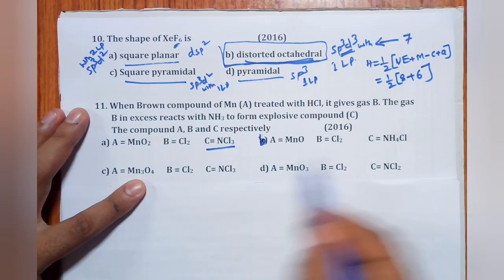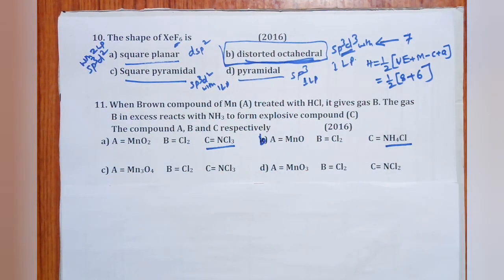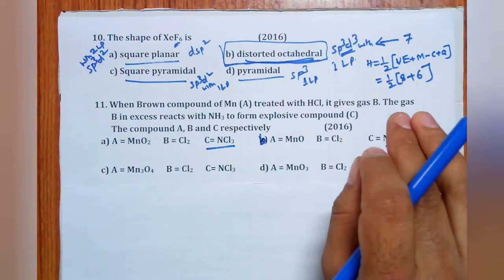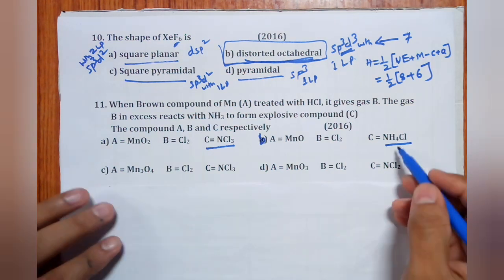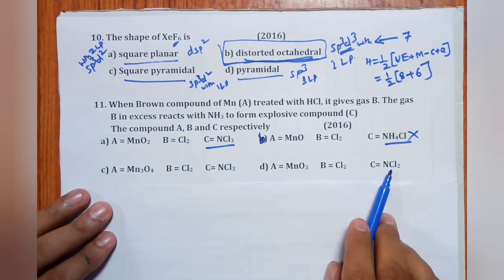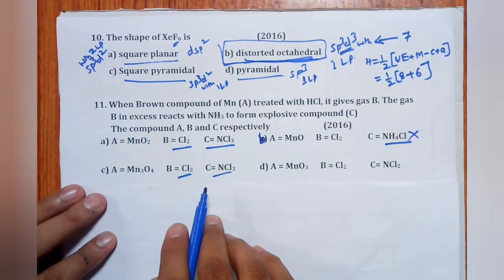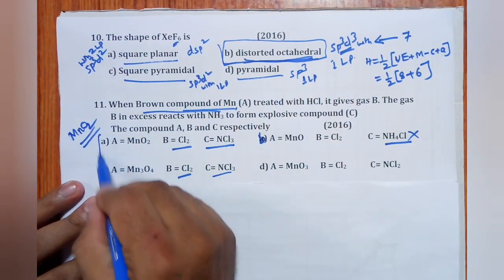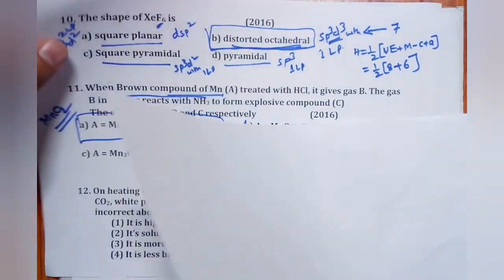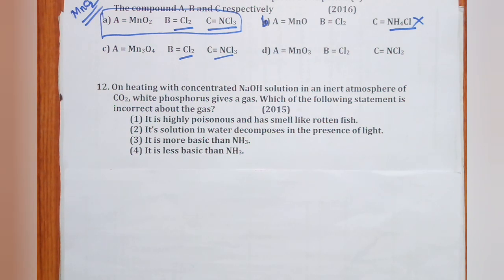Question 11: Brown compound of Mn treated with HCl gives gas A; gas A in excess reacts with NH3 to form explosive compound C. MnO2 is the brown compound — it reacts with HCl to give Cl2. Cl2 (excess) reacts with NH3 to give NCl3 (explosive). NH4Cl is not explosive — it is familiar from the laboratory. Answer is (a) — MnO2, Cl2, NCl3, NH4Cl.